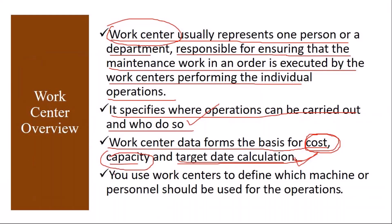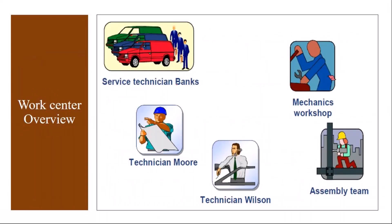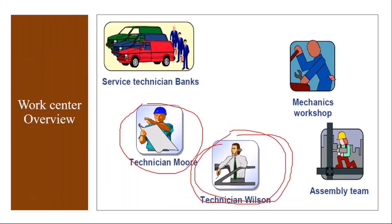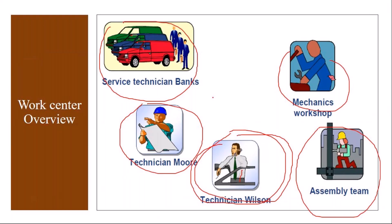You use work centers to define which machine or personnel should be used for operations — but that is from the PM perspective. From a CS perspective, the work center is nothing but a technician — one technician or a group of technicians — who does the repairs or customer care support, or an assembly team. All these are called work centers in the customer service module.